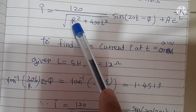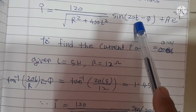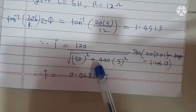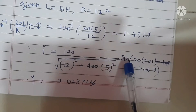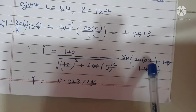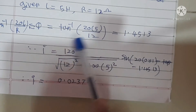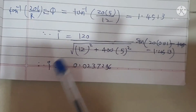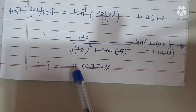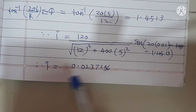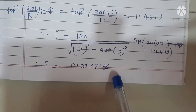After simplifying and substituting R equals 12, L equals 5, and T equals 0.01 into the expression for I: I equals 120/√(12²+400×5²) · sin(20×0.01 − 1.4513). After calculating this with a calculator, the current is approximately 0.023796 amperes.